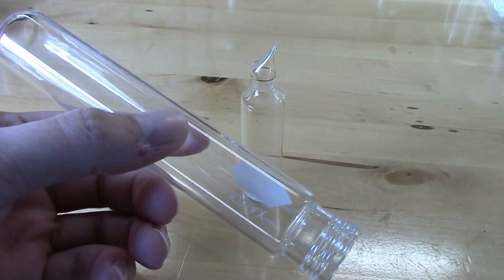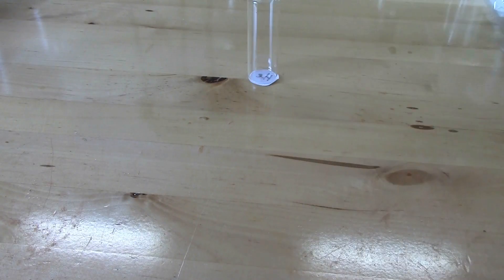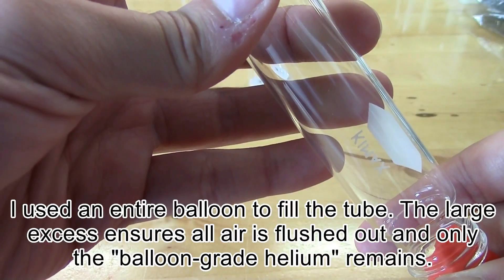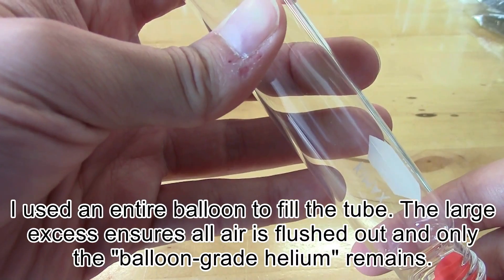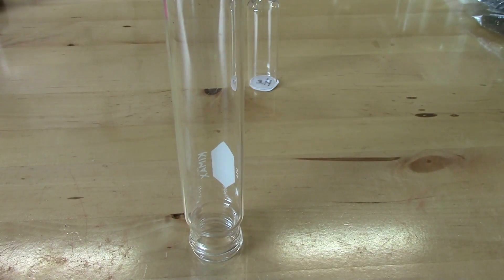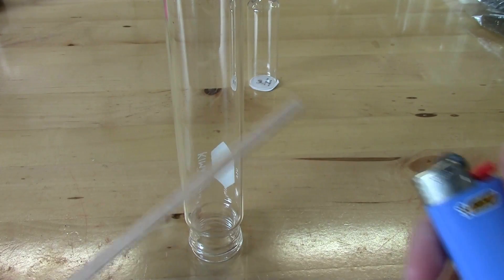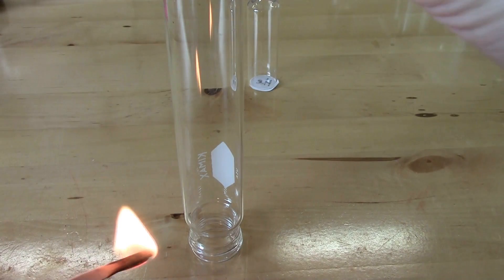I've got a big test tube here, and we'll try to fill this up with helium from the balloon. Now that we've got our vial filled with helium, let's try a gas test. We'll take a splint, light that, and then immerse that into the gas and see what happens.